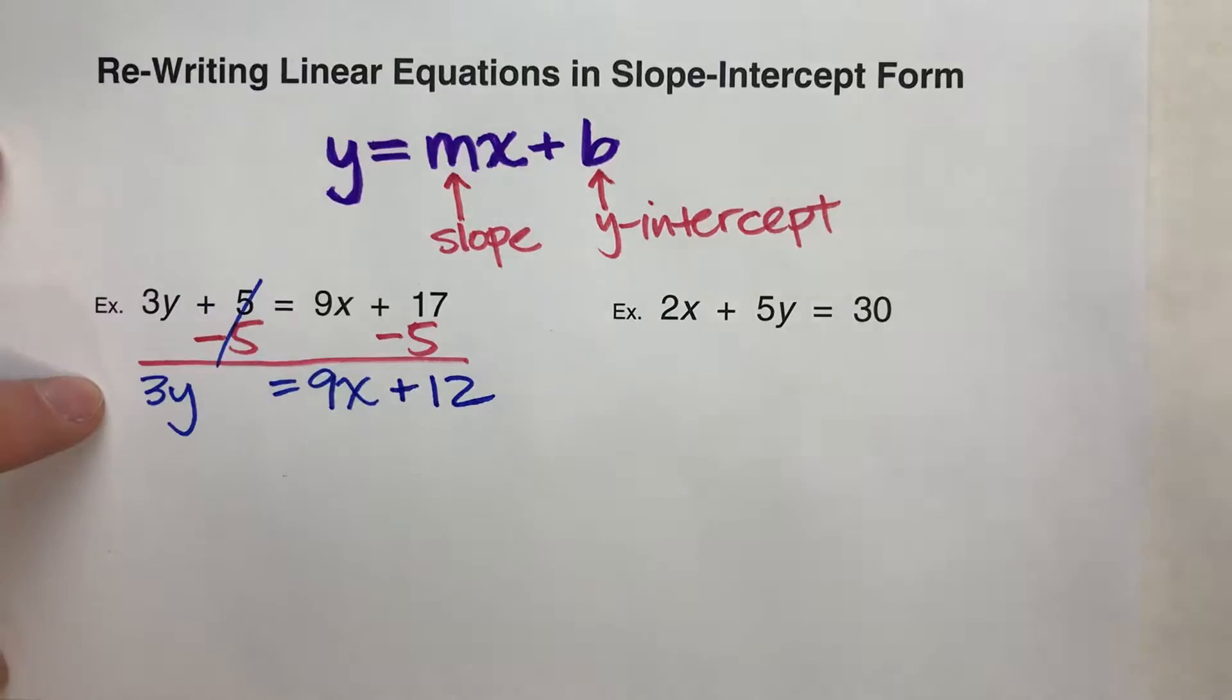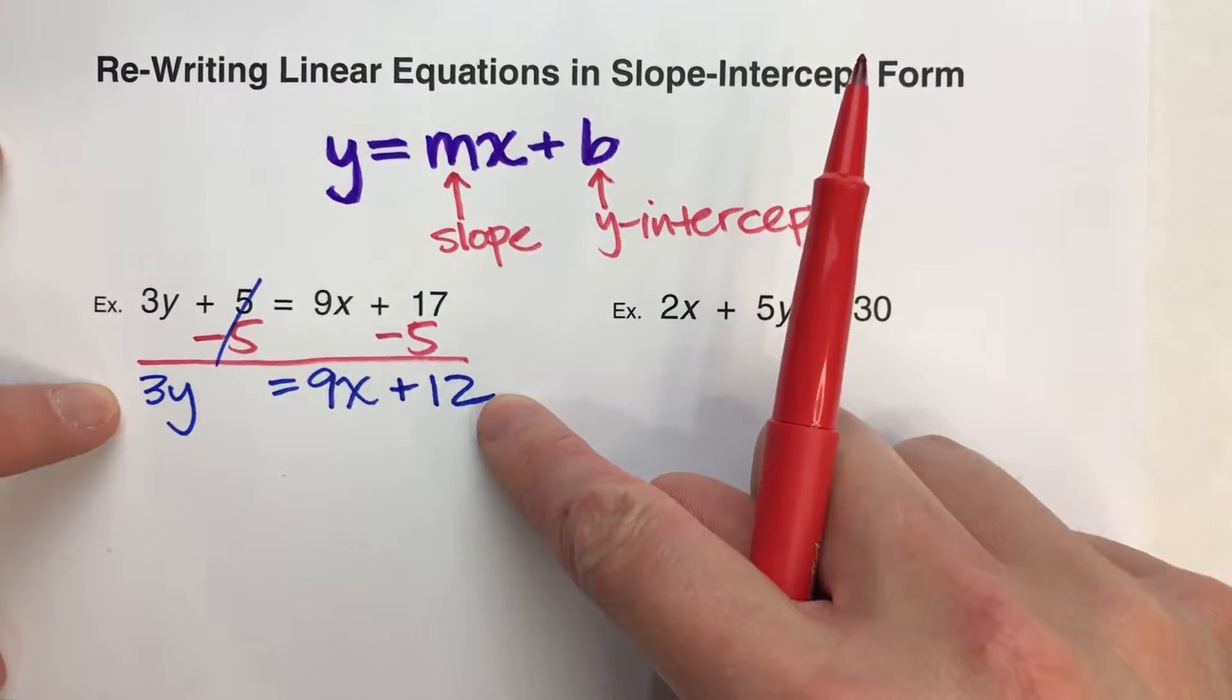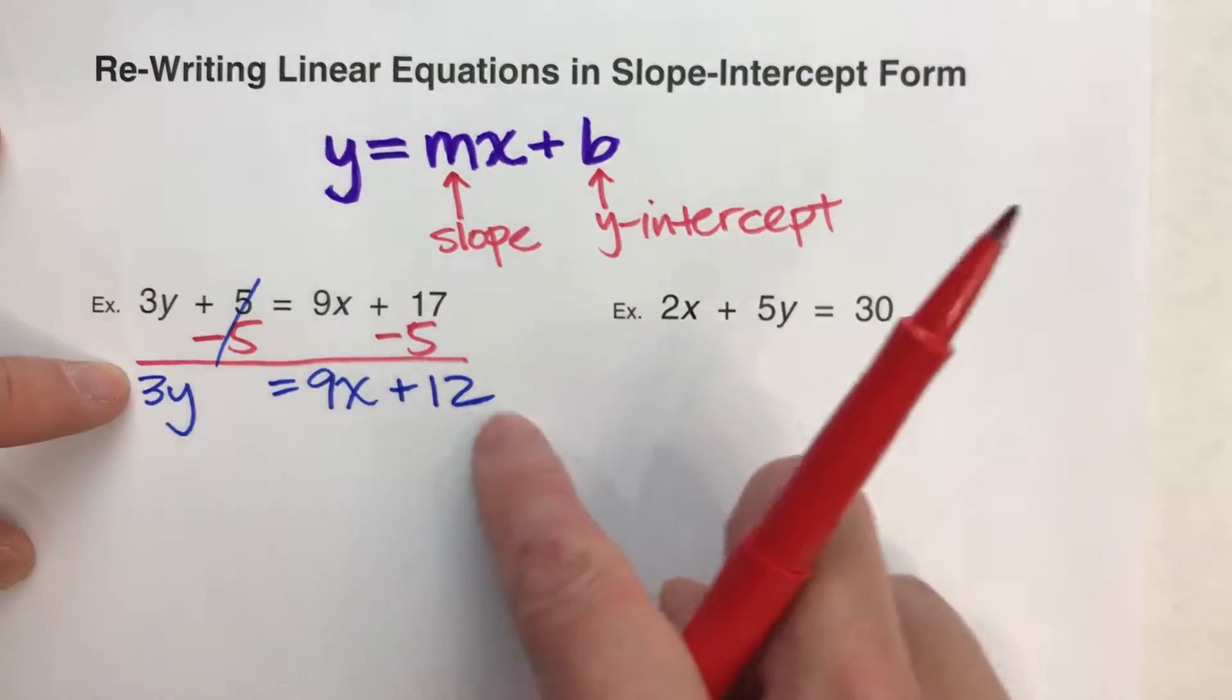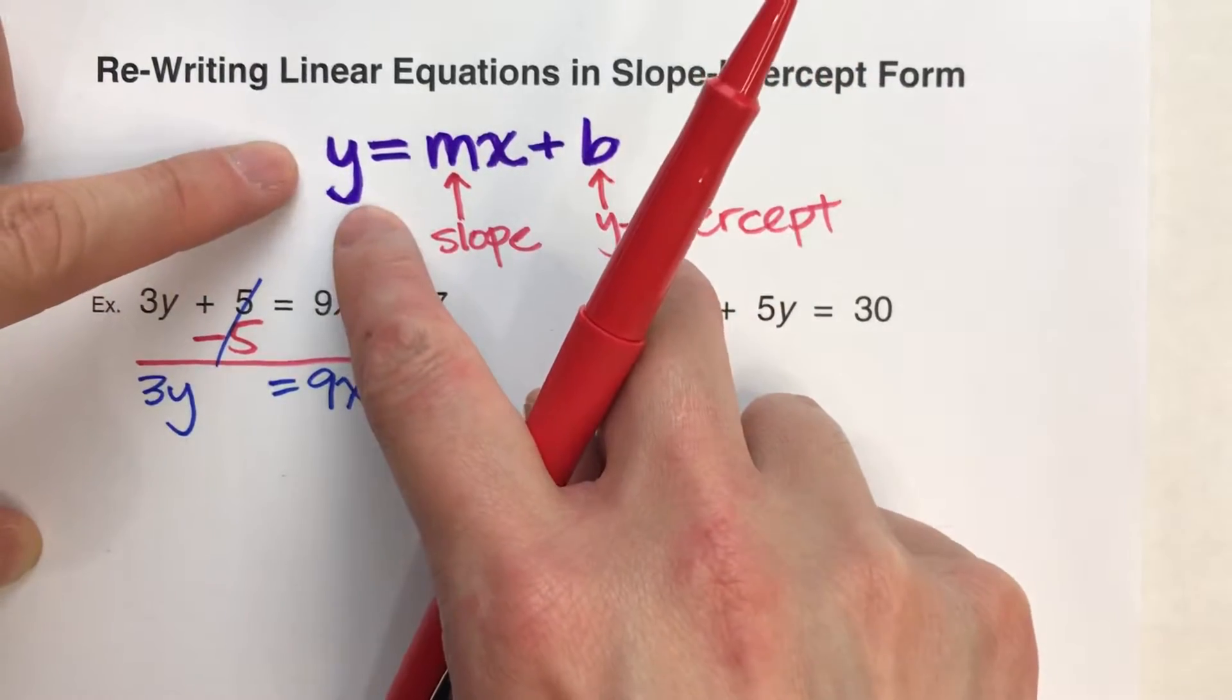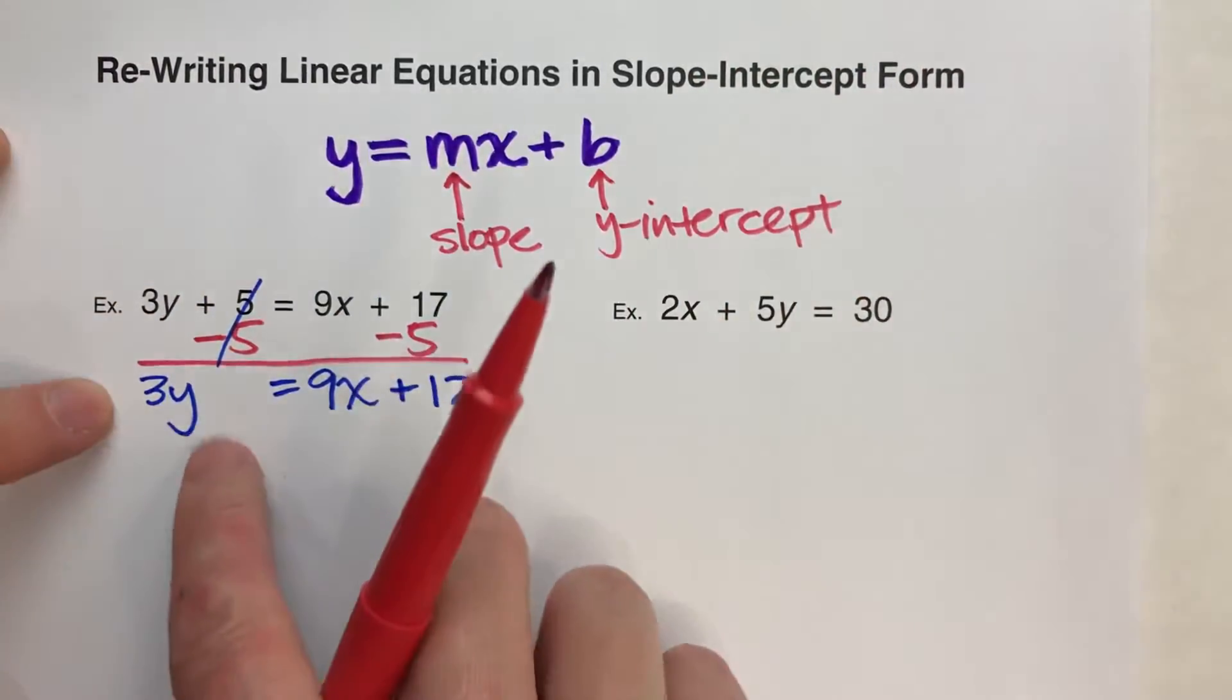Now, we've almost got this in slope-intercept form, but we've got 3y equals this stuff. We want just y to equal that stuff, so we've got to undo that 3.